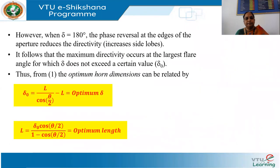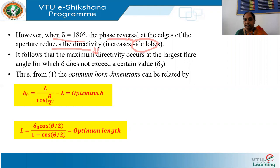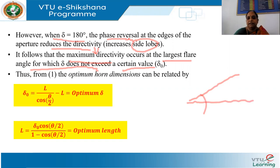When delta equals 180 degrees, the phase reverses, reducing directivity. We are increasing theta to get higher directivity, but because of delta equal to 180 degrees there is phase reversal, creating side lobes that reduce directivity again. Maximum directivity occurs at the largest flare angle for which delta does not exceed a certain value delta_naught. You fix a cap delta_naught on the phase deviation.